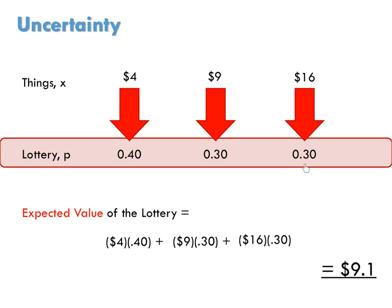And with 30% probability, she might win $7, giving her $16. The expected value of this lottery is $0.4 times 4 plus $0.3 times 9 plus $0.3 times 16, or $9.10.